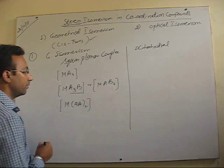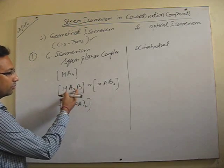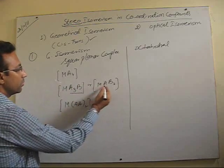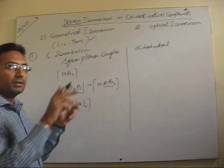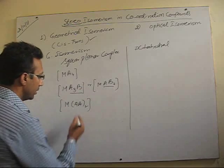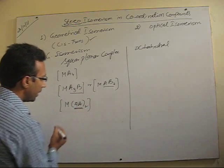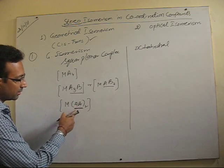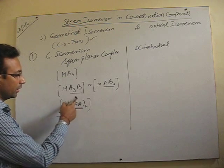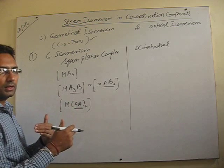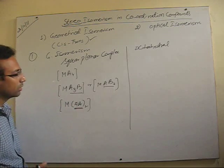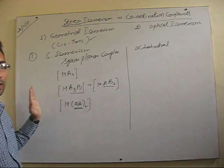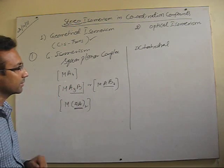If you try to change the environment of B or A by changing their position, you will see that the nearest environment will not change. In the case of MAA2, it is a bidentate ligand with two same donor atoms, so if you change the position of the ligand the environment will remain the same. These are square planar cases where geometrical isomerism is not possible.